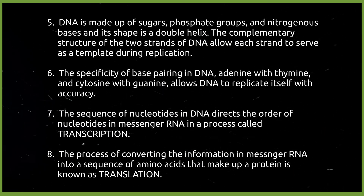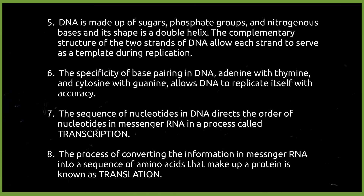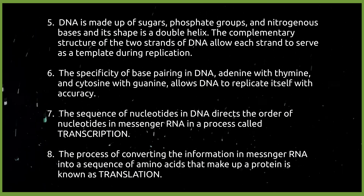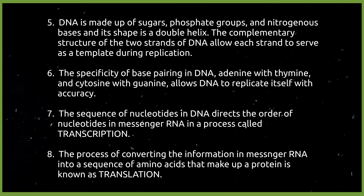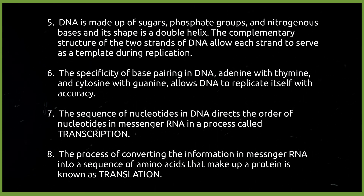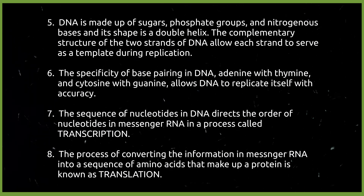DNA is made up of sugars, phosphate groups, and nitrogenous bases, and its shape is a double helix. The complementary structure of the two strands of DNA allows each strand to serve as a template during replication. The specificity of base pairing — adenine with thymine and cytosine with guanine — allows DNA to replicate itself with accuracy. The sequence of nucleotides in DNA directs the order of nucleotides in messenger RNA in a process called transcription. The process of converting the information in messenger RNA into a sequence of amino acids that make a protein is known as translation.